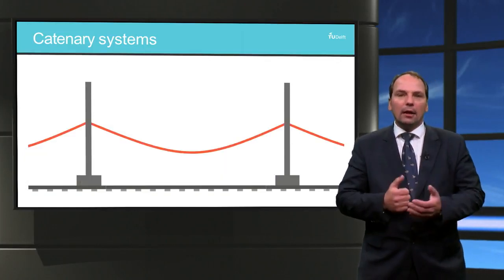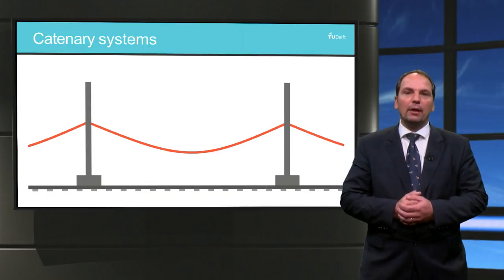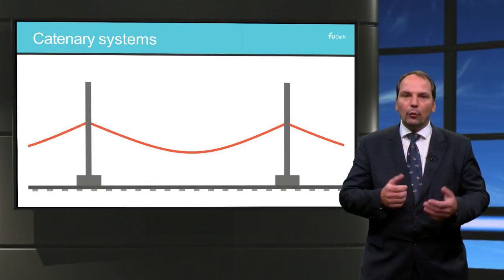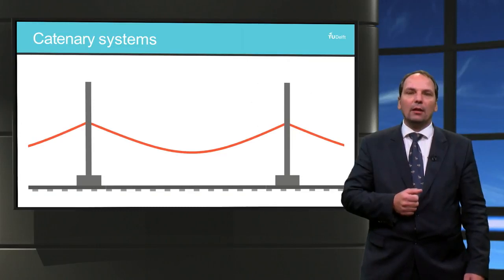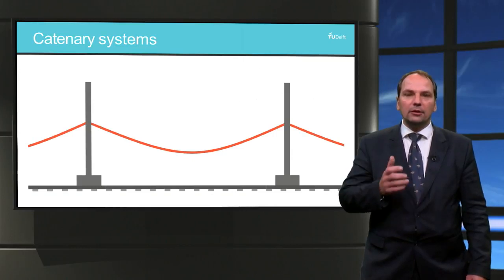Let's see why a catenary system needs such a complicated structure. The weight of the high voltage overhead lines causes the cables to sag. In order to have uninterrupted contact, these cables should be maintained horizontally.